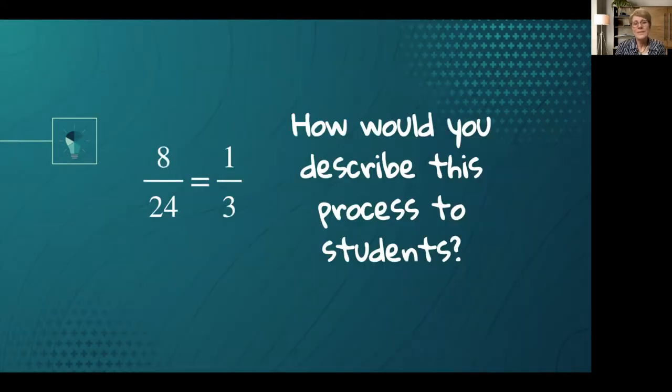So, given this example, how would you describe this process of turning 8 24ths into 1 3rd?